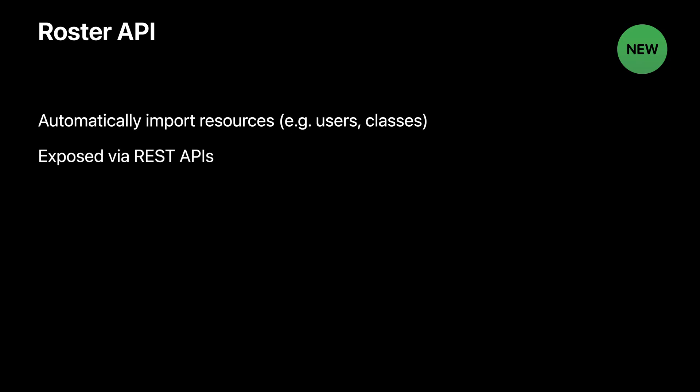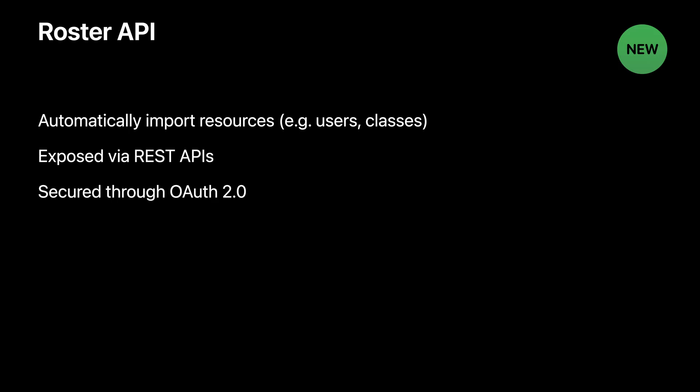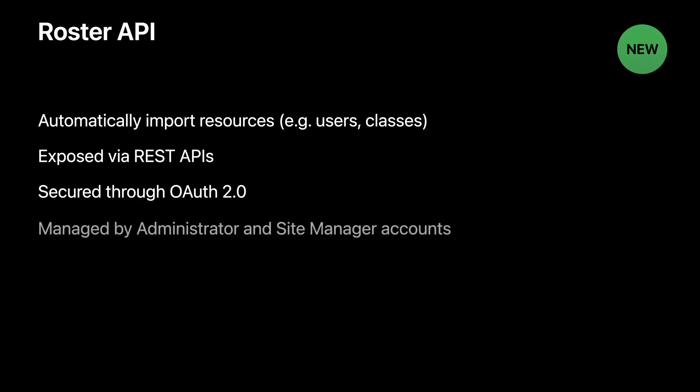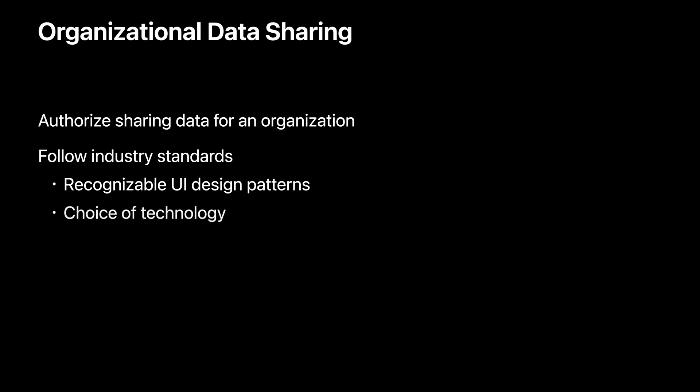These resources are defined in the form of REST endpoints. This data can be accessed by your app after the IT admin has granted permission through a successful OAuth 2.0 authorization. The administrator and site manager accounts in Apple School Manager can manage which apps are able to access the data. As part of this release, we have created a standardized way for apps to request access to organizational data — we call this organizational data sharing.